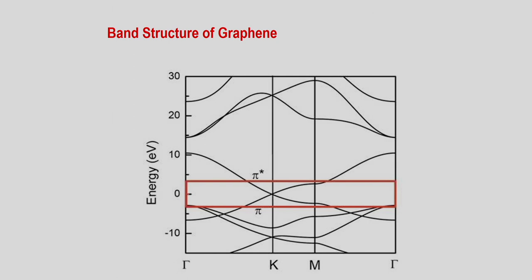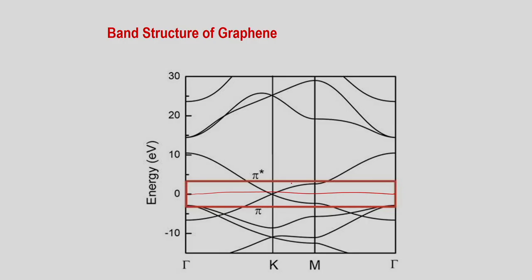The Fermi energy is at zero. Looking carefully, the pi and pi-star bands cross linearly at the K and M points. This gives rise to the low energy linear dispersion, which is why they are called massless Dirac fermions. However, they are not truly massless — they have electronic mass — and the density of states is also linear in energy, even though the dispersion looks pseudo-relativistic. The velocity is c/300, about 300 times smaller than the speed of light.